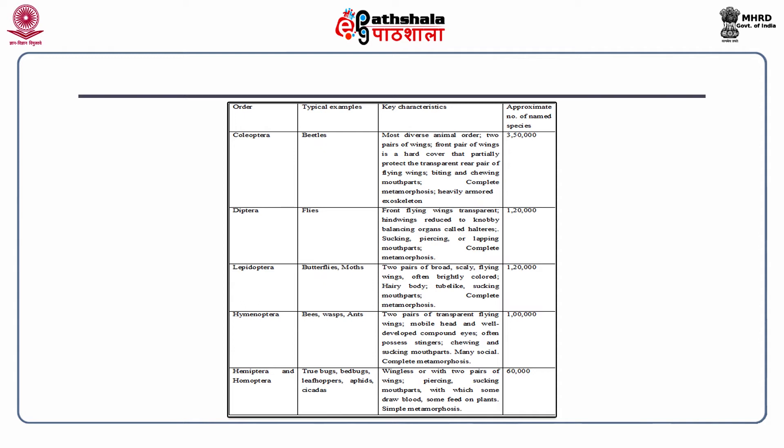Order Diptera: key characteristics include front flying wings and transparent hind wings reduced to knobby balancing organs called halteres, sucking, piercing or lapping mouthparts with complete metamorphosis. Order Lepidoptera: two pairs of broad scaly flying wings, often brightly coloured, hairy body, tube-like sucking mouthparts with complete metamorphosis.